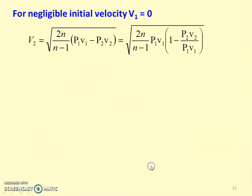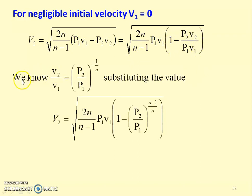For negligible initial velocity V1 equals 0, the exit velocity V2 from the previous equation becomes: V2 equals square root of 2n by (n minus 1) times P1V1 times (1 minus P2V2 divided by P1V1). Using V2/V1 equals (P2/P1) to the power minus 1/n from the polytropic equation, substituting gives: V2 equals square root of 2n by (n minus 1) times P1V1 times (1 minus (P2/P1) to the power (n minus 1)/n). This is the exit velocity in terms of the pressure ratio P2/P1.